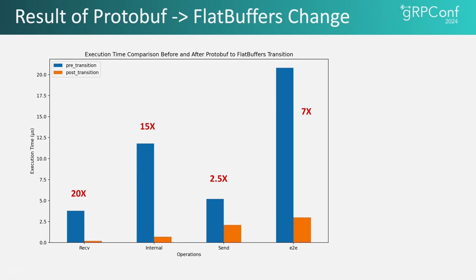The transition from protobuf to flat buffers resulted in significant performance improvements across various stages of the request-response cycle. Notably, we saw a 7x end-to-end latency reduction. Breaking this down further: we saw a 20x improvement for receiving requests, 15x for internal processing of messages, and 2.5x for sending back responses. These results clearly demonstrate the efficiency gains achieved by moving to flat buffers.